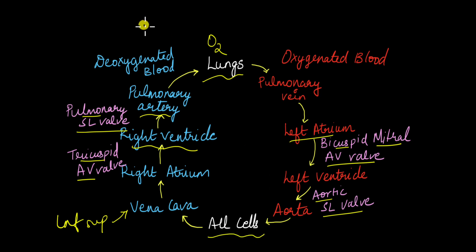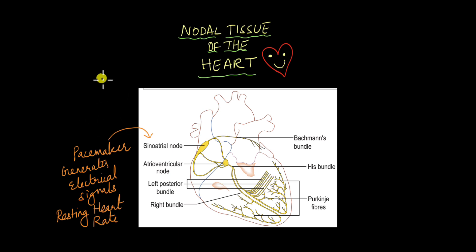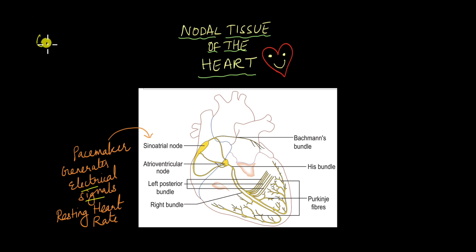Next, we will move on to the conductance system of the heart, or the nodal tissues of the heart. The heart beats to its own rhythm quite literally, because the heart has specialized tissues that can generate electrical signals needed for the heart to contract and relax. These tissues are modified cardiac muscles known as the nodal tissue of the heart, forming the heart's conductance system. This is why the heart does not rely on electrical signals from the nervous system to contract and relax — and why, as a fetus, your heart starts to beat immediately after it is formed.